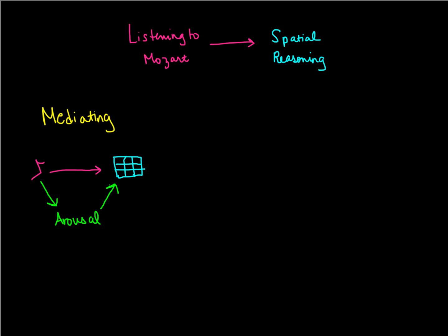Some researchers suggested that if your arousal goes up and your mood improves while listening to Mozart, then maybe that change in arousal leads to improved spatial reasoning. In other words, it's nothing special about Mozart itself — it's that listening to Mozart produces a change in arousal, which consequently produces a change in spatial reasoning. When you're specifying a mediating variable, you're really asking: why does that relationship exist? What explains the relationship I'm observing?